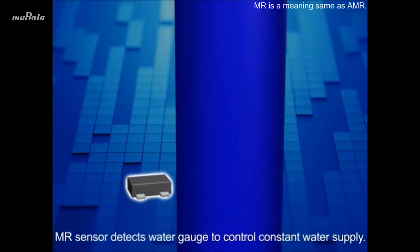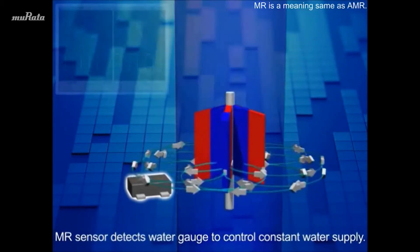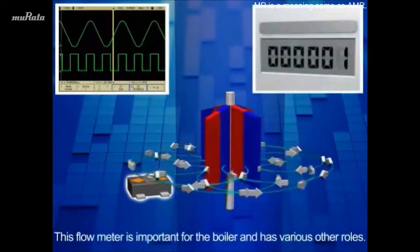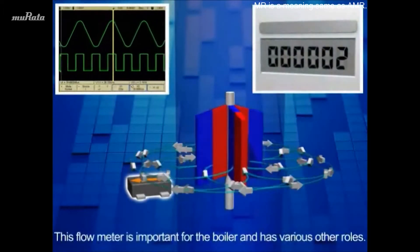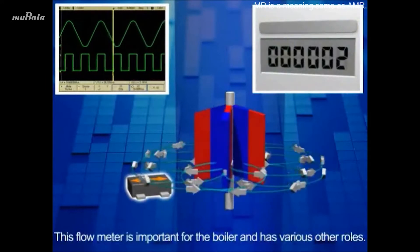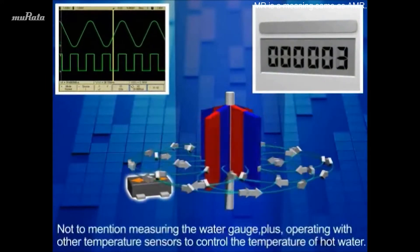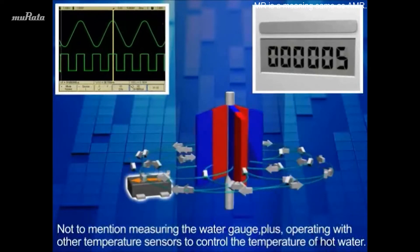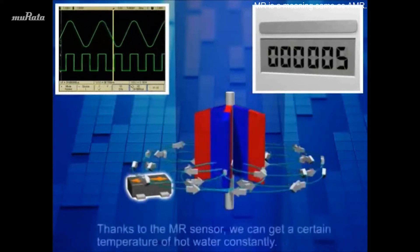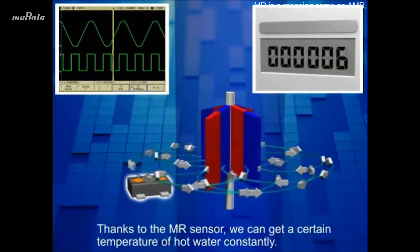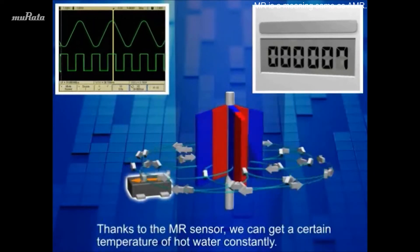MR Sensor detects water gauge to control constant water supply. This flow meter is important for the boiler and has various other roles, not to mention measuring the water gauge, plus operating with other temperature sensors to control the temperature of hot water. Thanks to the MR Sensor, we can get a certain temperature of hot water constantly.